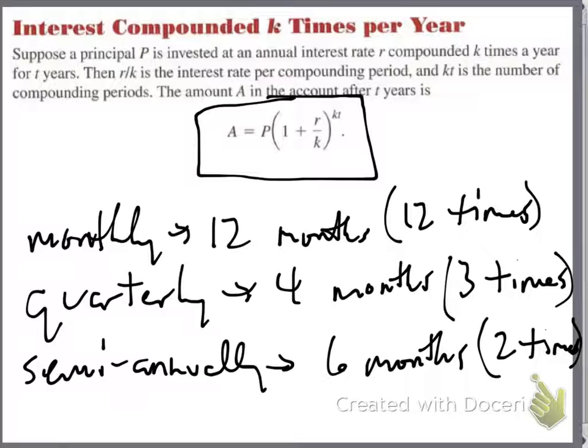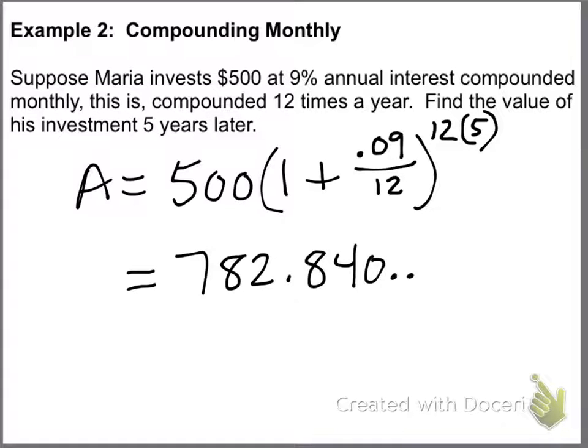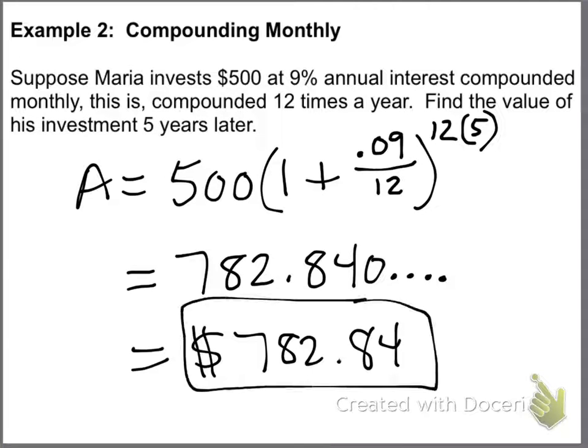Now, R is the interest rate. K is how many times per year it got compounded, or how many times in a year it got compounded. So, our rate is .09 for 9% divided by 12 to the 12 times 5 power. 12 is the number of times it got compounded. 5 is the number of years we are investing it. So, we do a little handiwork in our calculators. And, we come up with about $782.840 blah, blah, blah, blah. But, again, we're talking cash. We're talking $782.84.